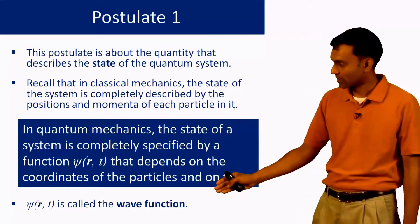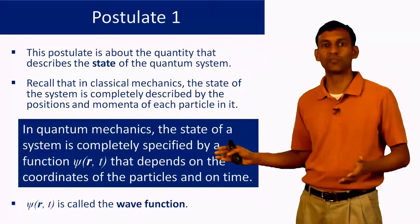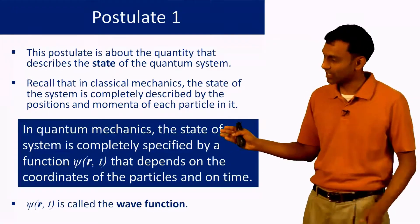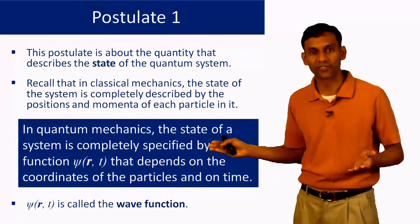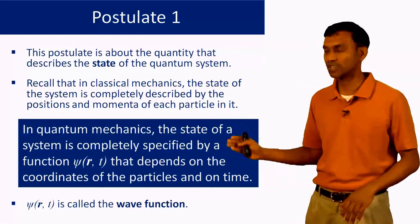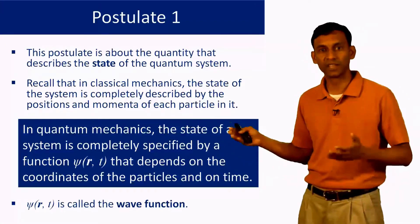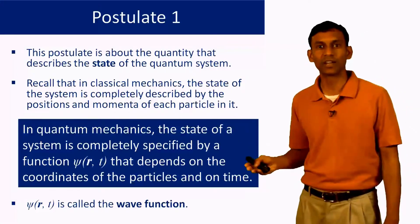It is called the wave function because it is similar to the function that describes a wave, which is a function of both position and time. And note that although we use the symbol ψ, we could have as well used f or g, something that describes a function. There is nothing special about using the symbol ψ, although because of convention and because this has been used all the time in quantum mechanics, a wave function is typically denoted by ψ.